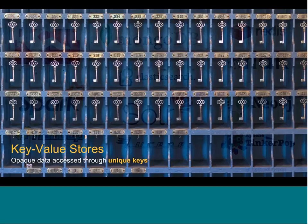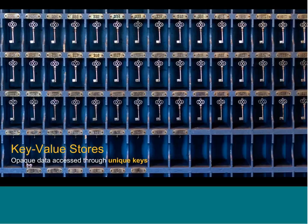A basic idea of a key-value store is that you have opaque data accessed through a unique key. The database doesn't care what that data is — it could be binary, it could be text. Key-value stores can offer very fast read, write, and access, so they're good for things like caching or highly variable data. But the downside is that you typically can't query against the values in the database — you can do range queries or query for a specific key, but you can't dive in and query against the actual data stored underneath those keys.